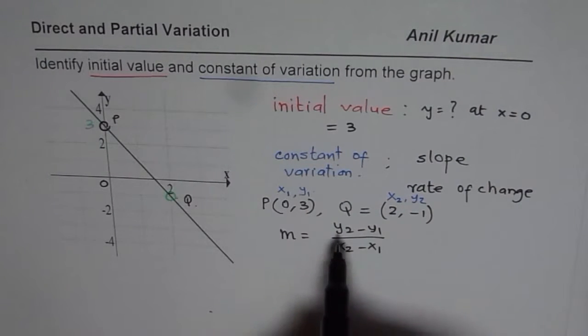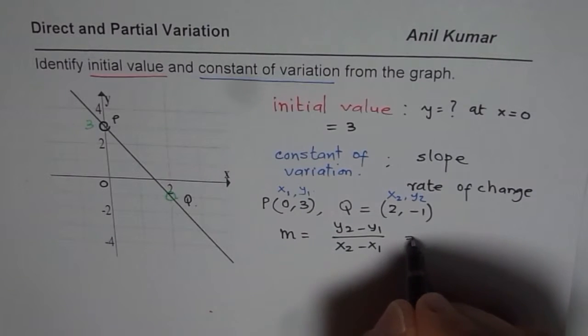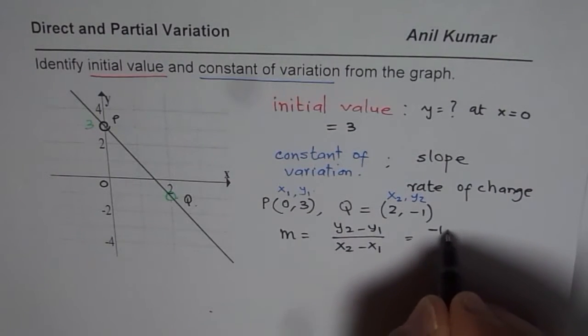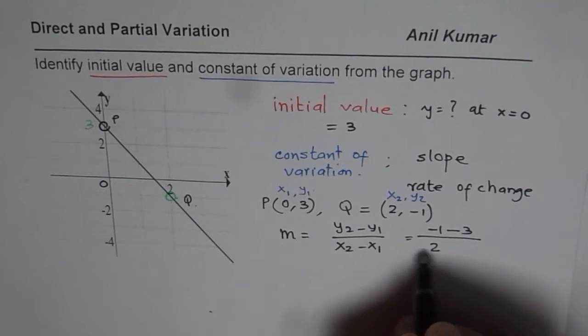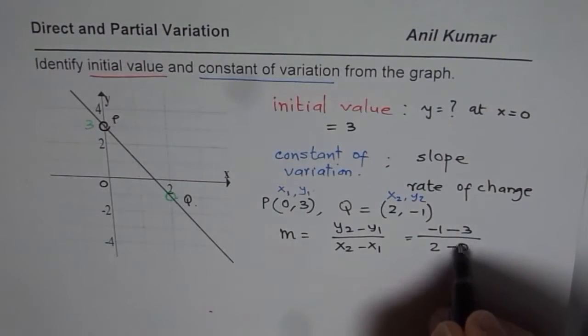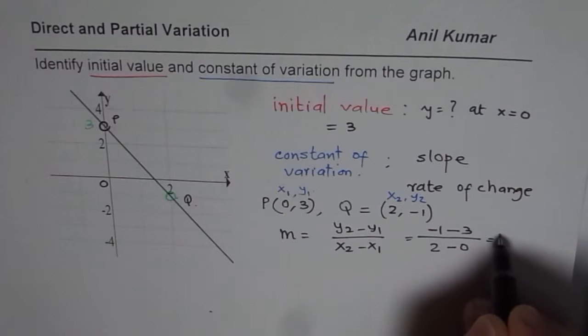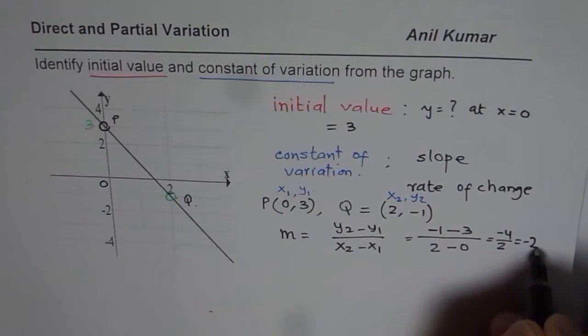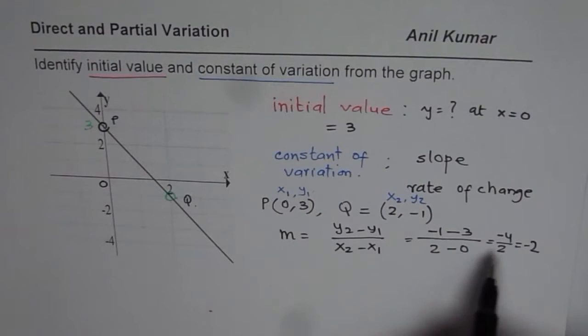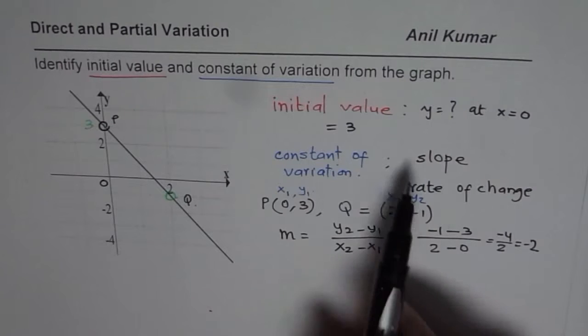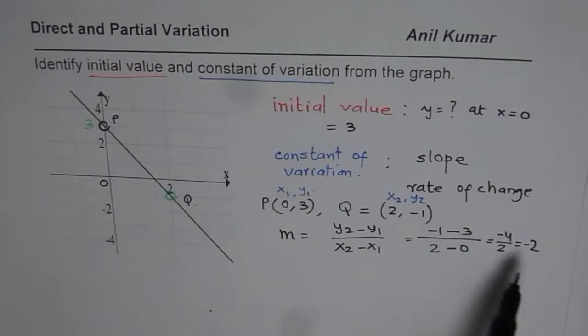Now, what is y2 for us? It is -1. So we can write -1 minus y1, which is 3, divided by x2, which is 2, minus 0. So -1 - 3 = -4, divided by 2. That gives us -2. So we get rate of change, or constant of variation, as -2. These are the two things which we have read from the graph.